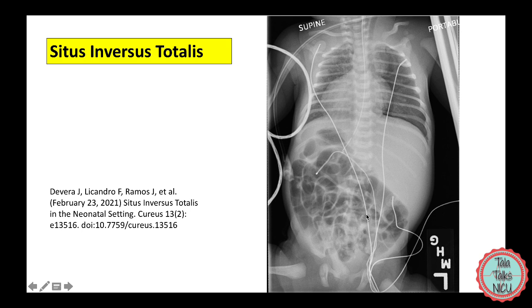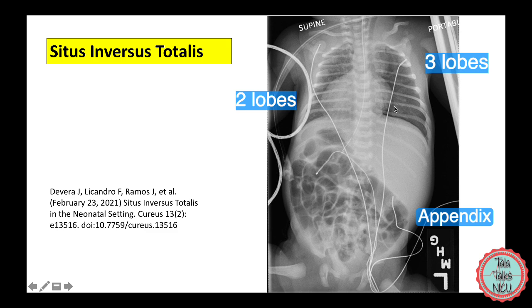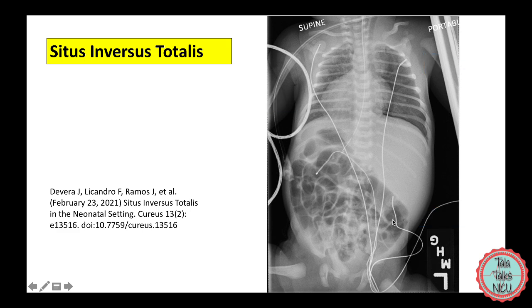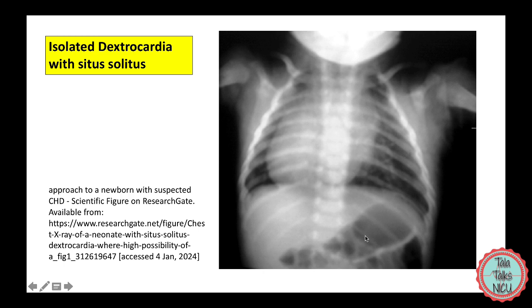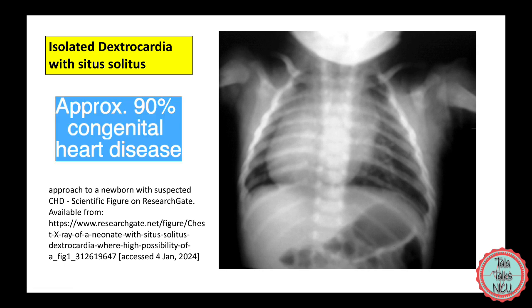In situs inversus totalis, also called mirror image dextrocardia, everything in the body is switched to the other side — the heart and the stomach bubble are on the right, the left lung would have two lobes, the right lung three lobes, and the appendix would be on the left side. These infants have a slightly higher incidence of congenital heart disease, estimated between 1 and 10 percent. In dextrocardia with situs solitus, the stomach bubble is on the opposite side of the heart, and this has an extremely high incidence of congenital heart disease — up to about 90 percent — and definitely warrants an echo.